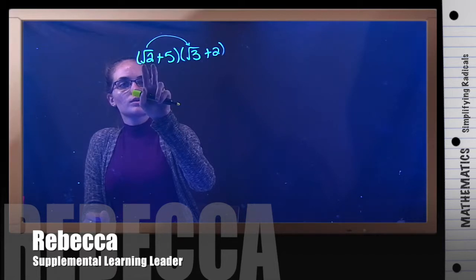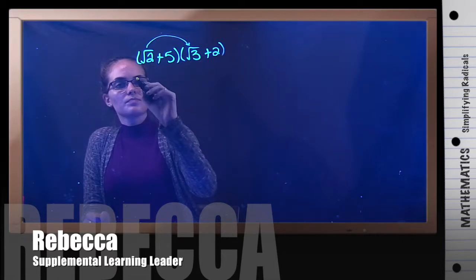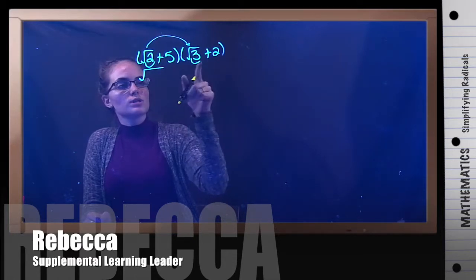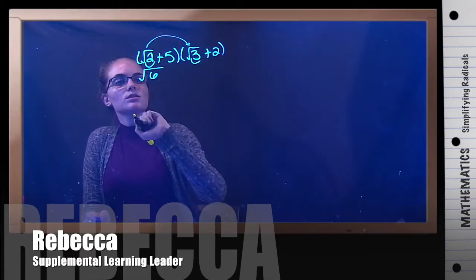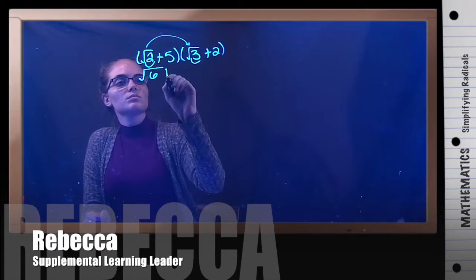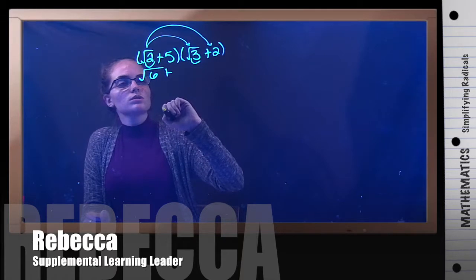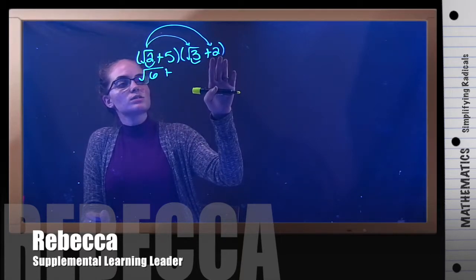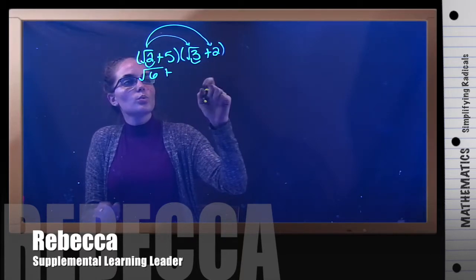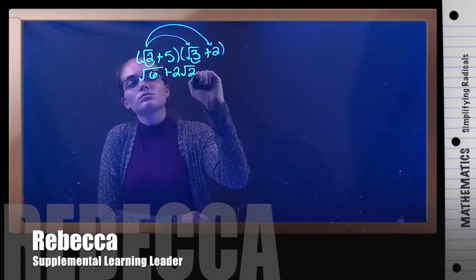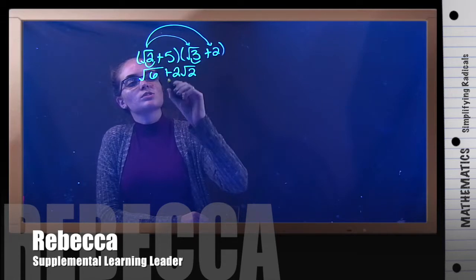So first we have to do the square root of 2 times the square root of 3. And we have to multiply the insides so 2 times 3 is 6. So we have the square root of 6 plus, now we're going to do the square root of 2 times 2. And because this 2 is not inside of a radical we're not going to multiply these together. Instead we're just going to make this 2 square root of 2.